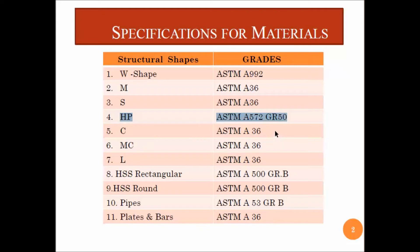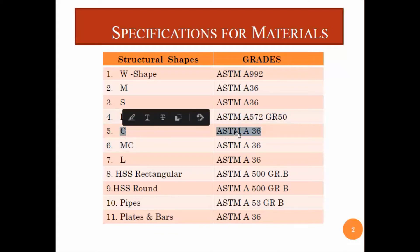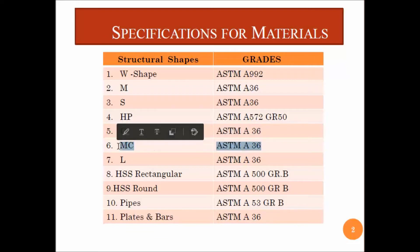The fifth one is the MC section, also called the miscellaneous channel. The difference between a standard channel and a miscellaneous channel is that in standard channels the slope is constant at 2 on 12, whereas in the miscellaneous channel the width and slope of the channel are going to vary.